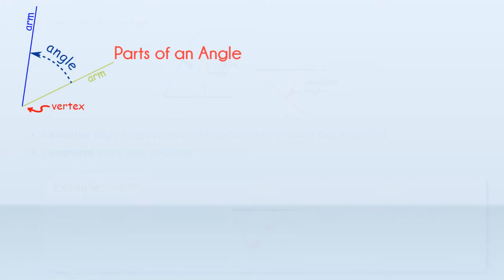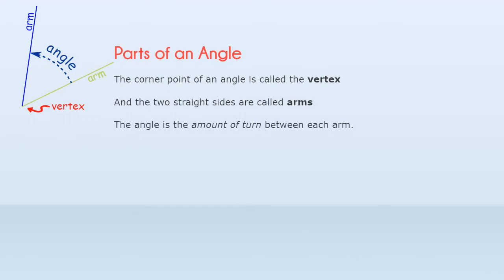Parts of an Angle. The corner point of an angle is called the vertex, and the two straight sides are called arms. The angle is the amount of turn between each arm.